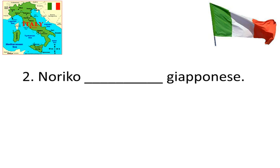Noriko blank giapponese. Noriko is a Japanese boy's name, so the sentence wants to say Noriko is Japanese. So we have to again figure out what is Noriko — well, that's a lui. Therefore we need the lui form of essere, and so it is the same as number one: è. Noriko è giapponese.